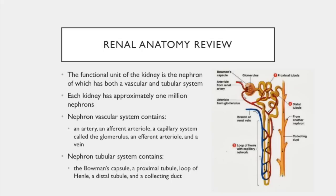The afferent arteriole brings the blood to the glomerulus, and the efferent arteriole carries blood away from the glomerulus — that's the filtered blood. So the afferent arteriole carries pre-filtered blood and the efferent carries filtered blood. The tubular anatomy of the nephron contains the Bowman's capsule, a proximal tubule, the loop of Henle, a distal tubule, and the collecting ducts.